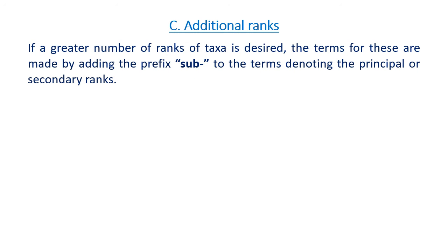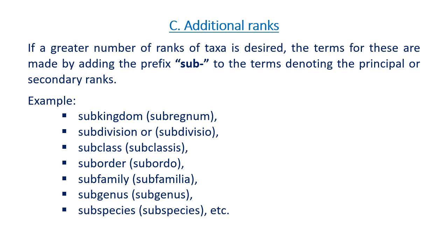The additional ranks: if a greater number of taxa is desired, the terms are made by adding the prefix 'sub' to the terms denoting the principal as well as secondary ranks. For example: sub-kingdom, sub-division, sub-class, sub-order, sub-family, sub-genus, sub-species, and so on.